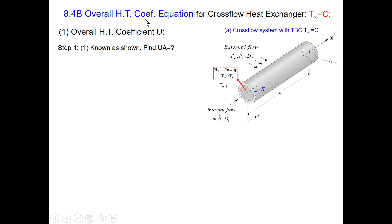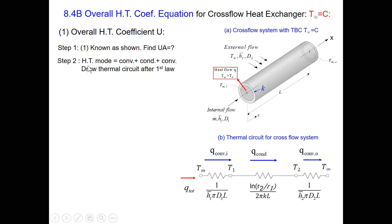This is the overall heat transfer coefficient equation. This is our cross-flow system with internal flow going through the tube and external flow across the tube. The heat flow Q is from internal fluid to external fluid. We are looking for the equation for UA. Step 2: identify all the heat transfer modes. There is convection between internal flow and inner tube surface, conduction within the tube wall, and convection between external flow and outer tube surface. Next, we can draw the thermal circuit with heat flow and corresponding thermal resistance.